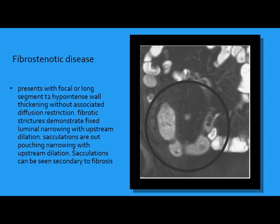On MRI, we use T2 hypointense signal. The segment behind a fibrotic blocked area becomes hypointense on T2. Fibrotic stricture demonstrates fixed luminal narrowing with upstream dilation. Strictures can be secondary to fibrosis. This is the MRI showing the ileal loop, this is fibrosis, and this is the upstream dilation.